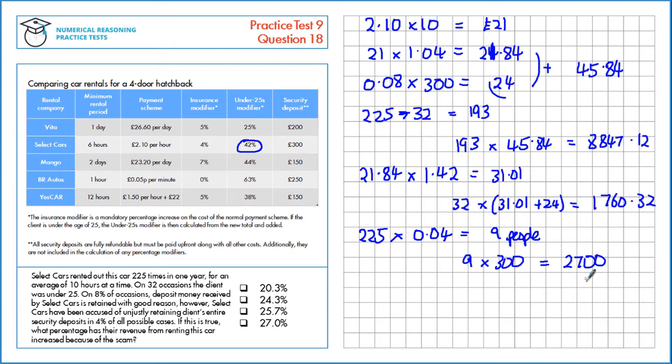Let's figure out how much this is as a percentage of total revenue. That's £2,700, the amount from the scam, divided by the total amount they take in: the £2,700 from the scam, the amount from over 25s, and the amount from under 25s. We want that as a percentage, so I'll multiply by 100, which gives us 20.3%.